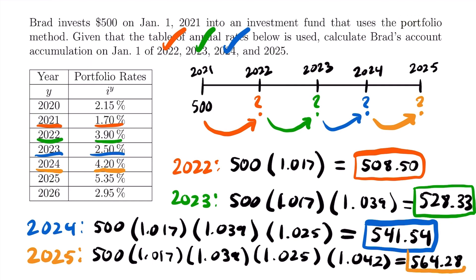Multiplying everything together, we find that the accumulated value at the beginning of 2025 is $564.28. That is the accumulated value on January 1st of 2025. With that, we have now completed this example, finding the accumulated value at the beginning of each year for Brad's account given his initial investment of $500 in 2021. Let's take a look at one more example for this video.